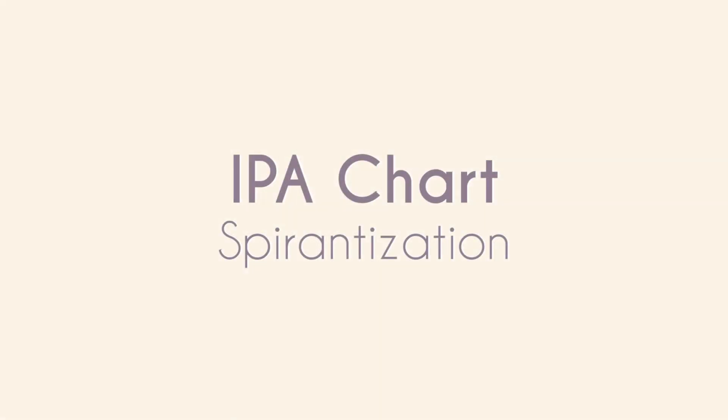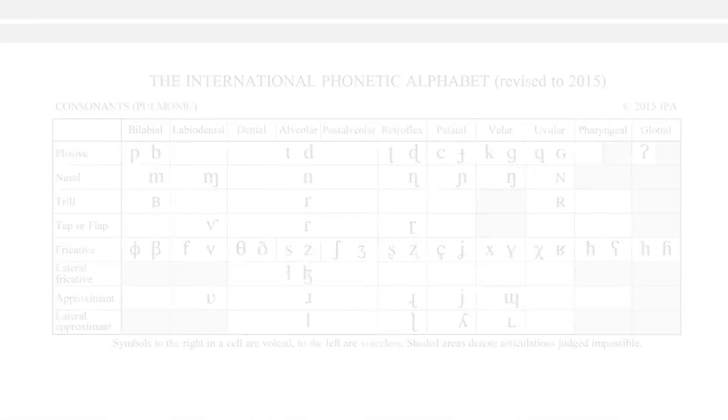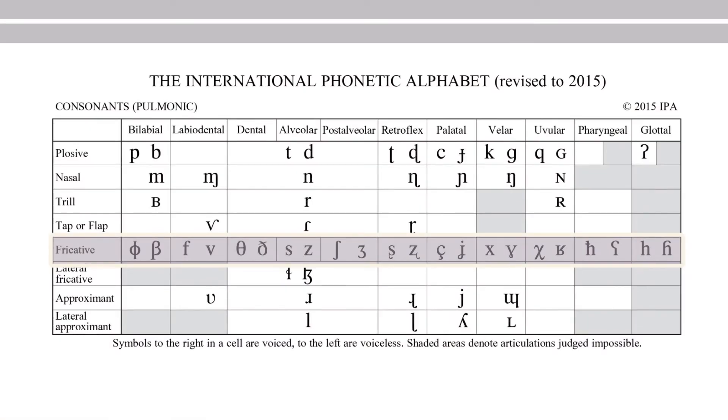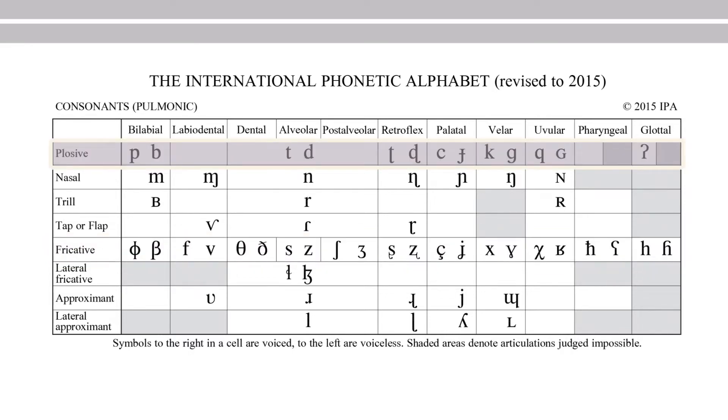Fricative is a phonetic category of consonant sounds on the basis of manner of articulation, as you can see in the IPA chart. Plosive changing to fricative—that's aspirantization.